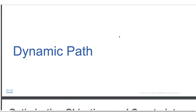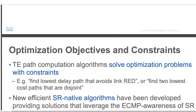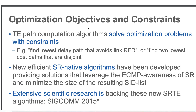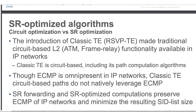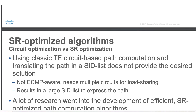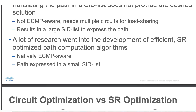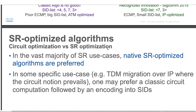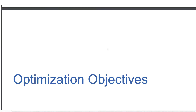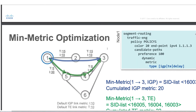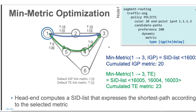Let's go ahead and quickly talk about the dynamic path. Again, there is an optimization objective and there are some constraints. We just saw an example where the optimization objective is to use the lowest TE metric. So let's talk about the optimization objective. In the case of optimization objective, we are saying a minimum metric optimization.